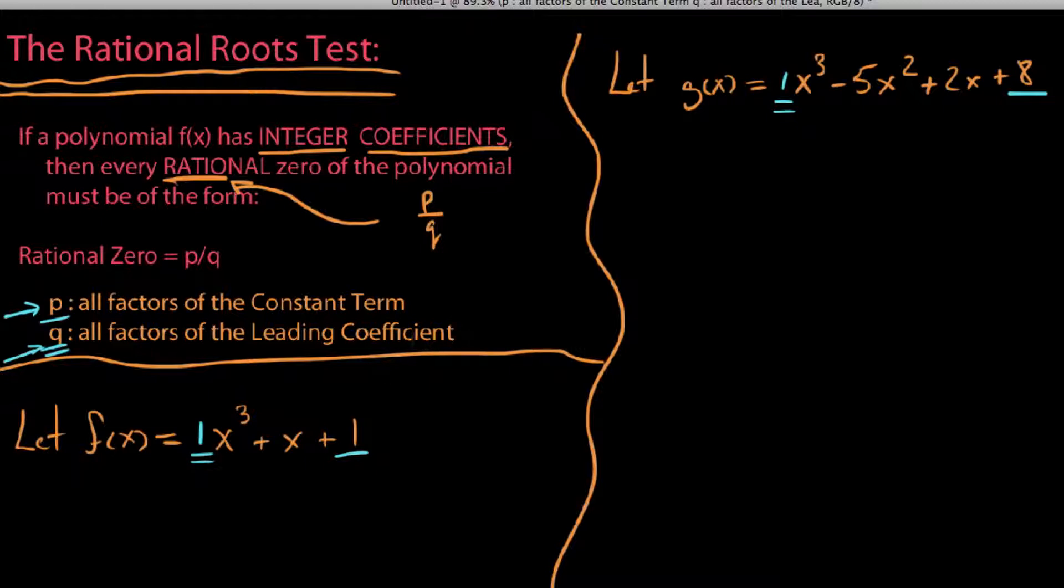For example, with f down here, we see that the constant term is 1, whereas up here with g, we see the constant term is 8. But we'd say p represents all the factors of that constant term, where q, now q, we say q is all the factors of the leading coefficient. So, in the first instance, we say the leading coefficient is 1.